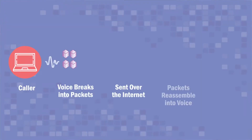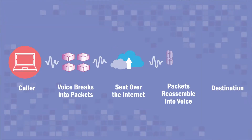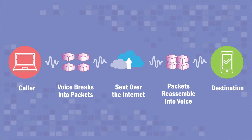In a VoIP phone system, voice is converted into data packets and transferred between two or more users. To obtain high call quality, these data packets need to arrive at the destination together and in the right order. VoIP QoS maintains call quality by prioritizing network traffic passing through a router, providing users with good service.